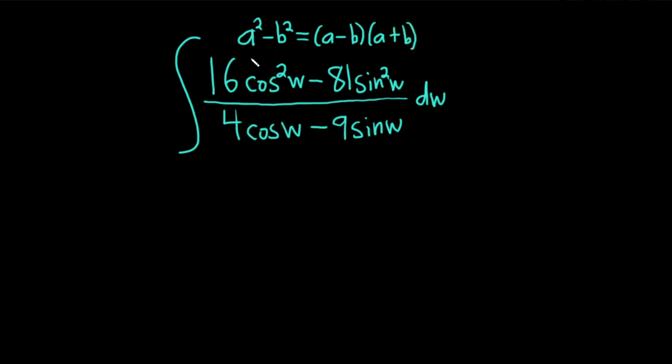So to do that you want to think of the 16 cosine squared as follows. I'm going to go ahead and show an intermediate step. So this is really 4 cosine w squared. It's the same thing because you square the 4 and you square the cosine.